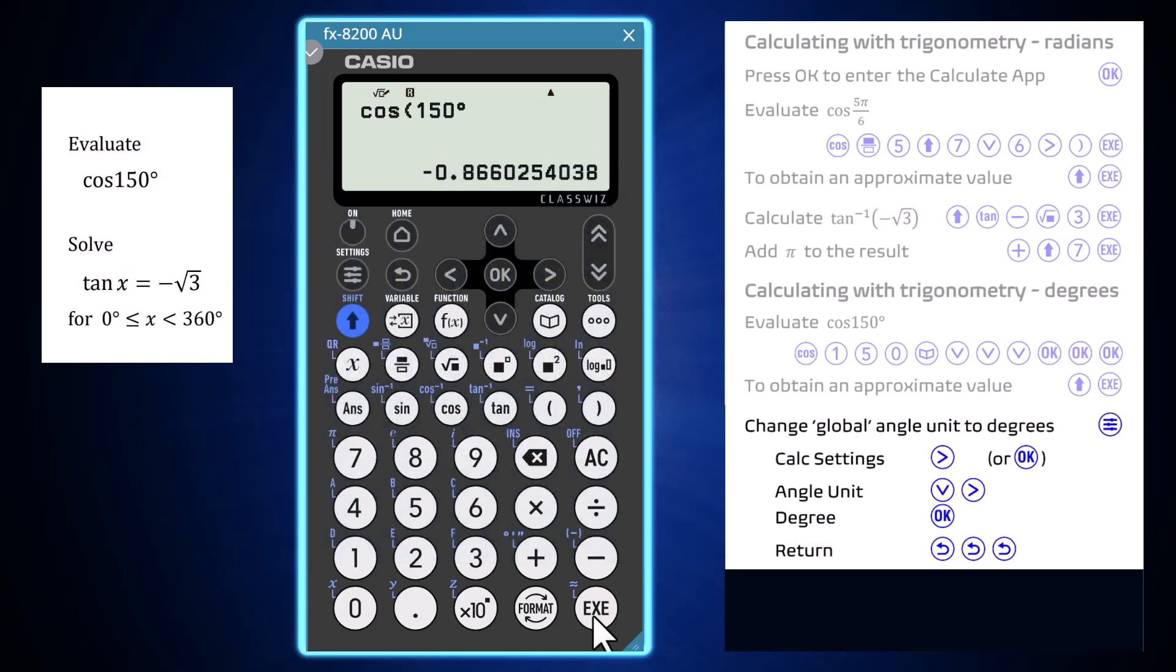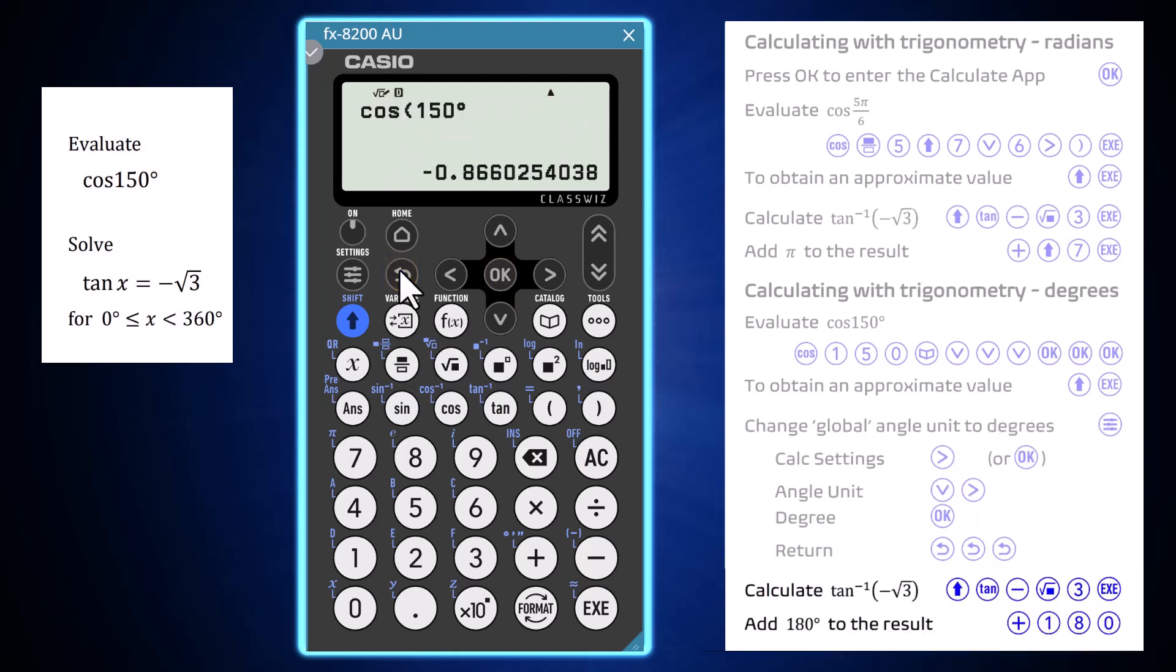Alternatively, the 8200 global angle setting can be changed to degrees. To do this, press the Settings key, press OK to open the calculator settings, arrow down and right to open the angle unit, and then press OK to set the calculator to degrees. With this done, use the back arrow to return to the calculation screen, then find the arc tangent of negative root 3 measured in degrees. Add 180 degrees to this output to obtain a solution to the equation in the domain provided.